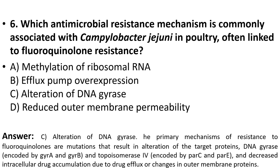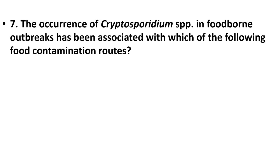The primary mechanism of resistance to fluoroquinolones involves mutations resulting in alteration of target proteins: DNA gyrase encoded by the gyrase gene and topoisomerase encoded by parC and parE genes, and decreased intracellular drug accumulation due to drug efflux or changes in outer membrane proteins.